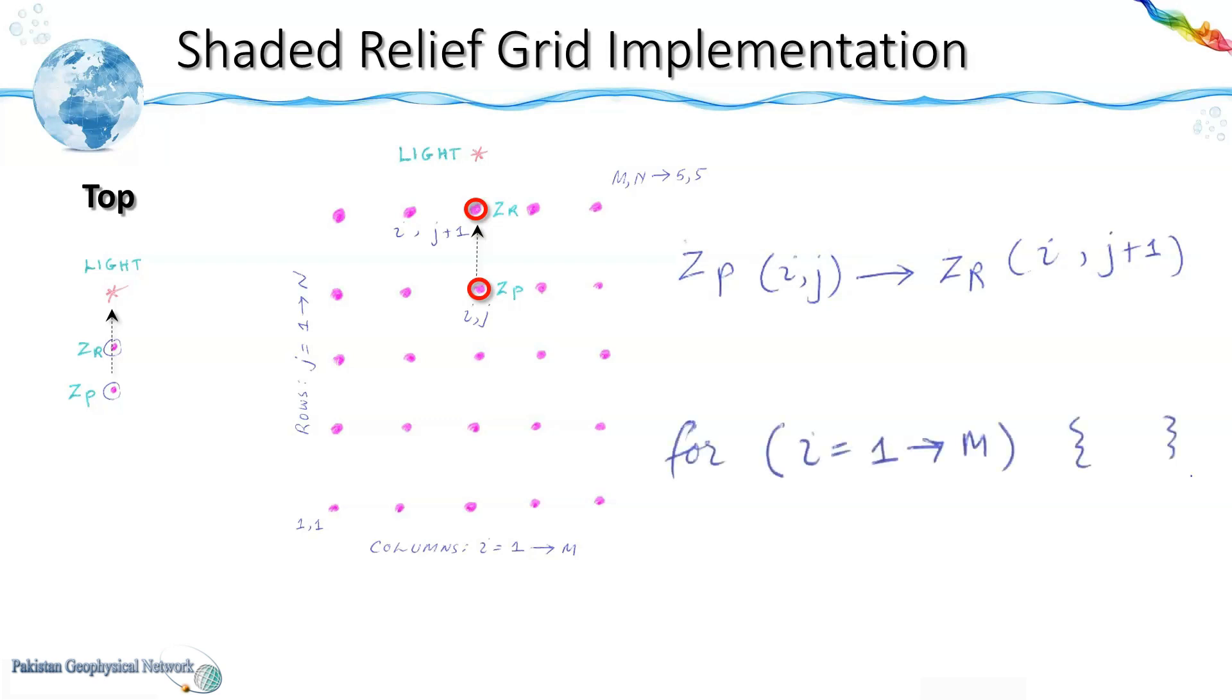And in this case the loop for i would be 1 to m. It would be the complete loop because we don't need any reference node on its sides. While the loop for j would be the same, 1 to n minus 1. And so all the nodes within the green box would be where shaded relief would be computed.